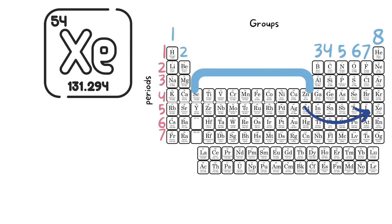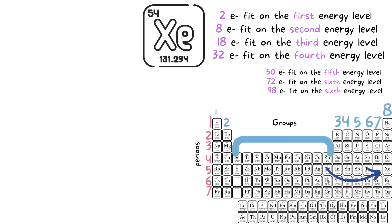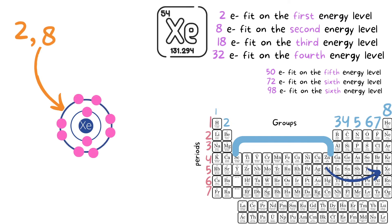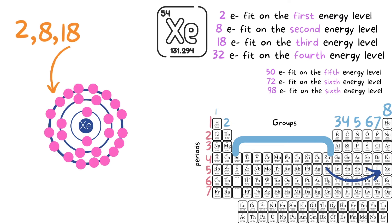So one last example using xenon. Xenon is in period five, group eight, and has 54 electrons. First shell we fill up with two electrons. Second we fill up with eight electrons. Third we fill up with 18 electrons. Now the fourth shell we technically have a capacity of 32. However, we need to have eight electrons in that last shell, the valence shell.